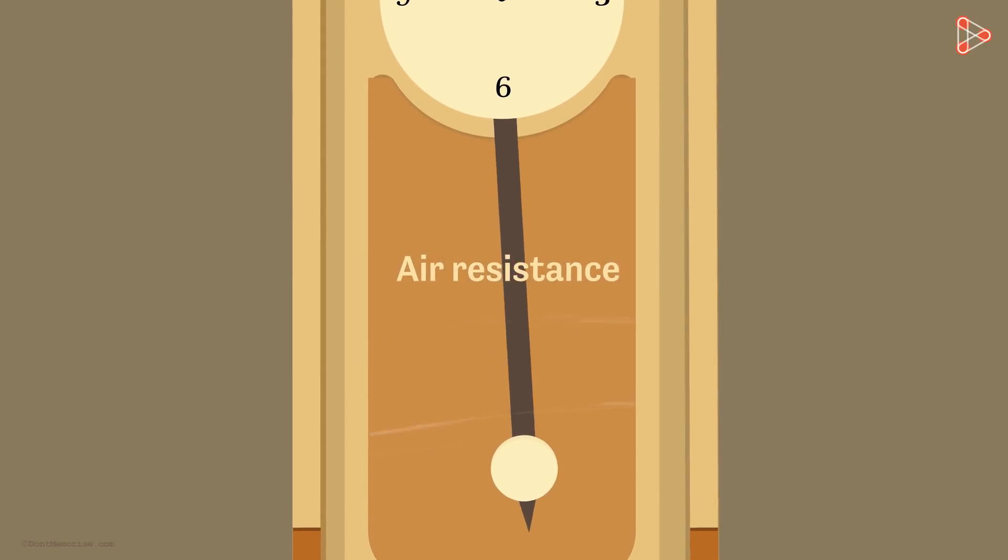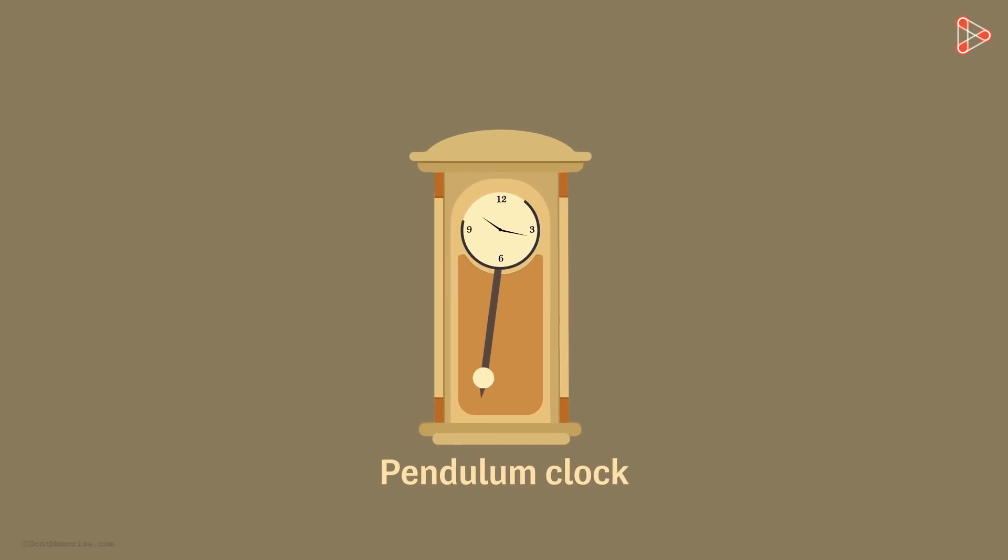So, if the air resistance slightly affects the back and forth motion of a bob, the time period will not be affected. The clock will always show the accurate time.